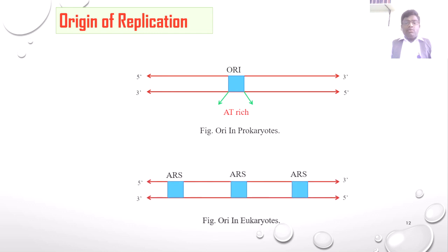In eukaryotes — complex organisms with large genome size — replication must start at multiple points. Therefore, multiple ORIs are present and they operate automatically; this is called the ARS sequence, or autonomous replicating sequence. The structure of the ORI is similar to that of the prokaryotic ORI.